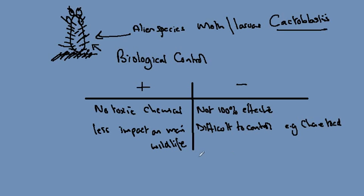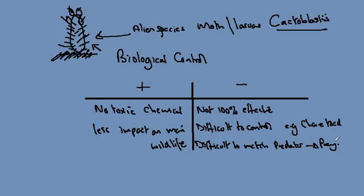Another downside is that sometimes it's difficult to match a predator to the prey. It may well be that you can't actually find a suitable predatory or herbivorous animal to remove your pest.